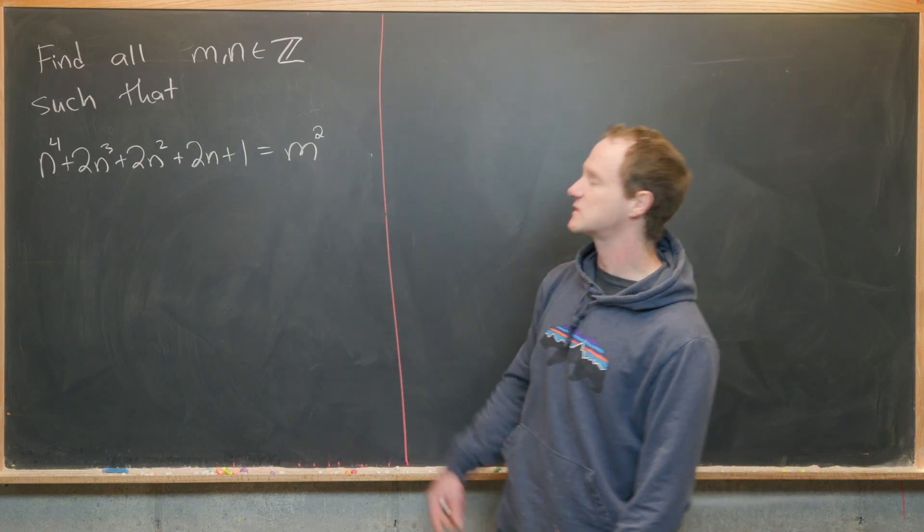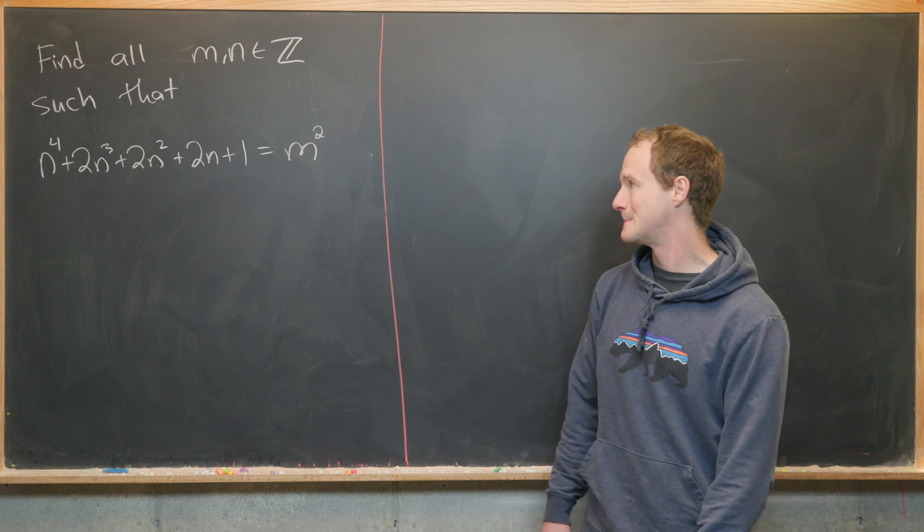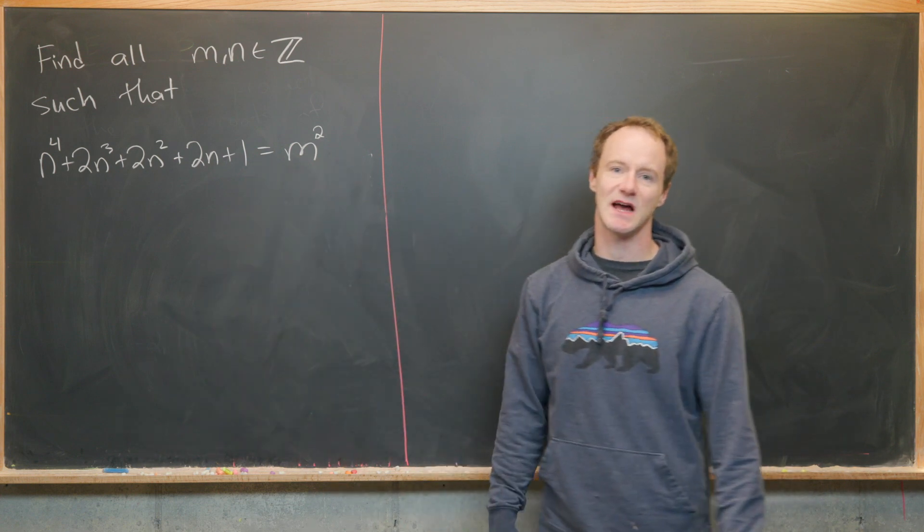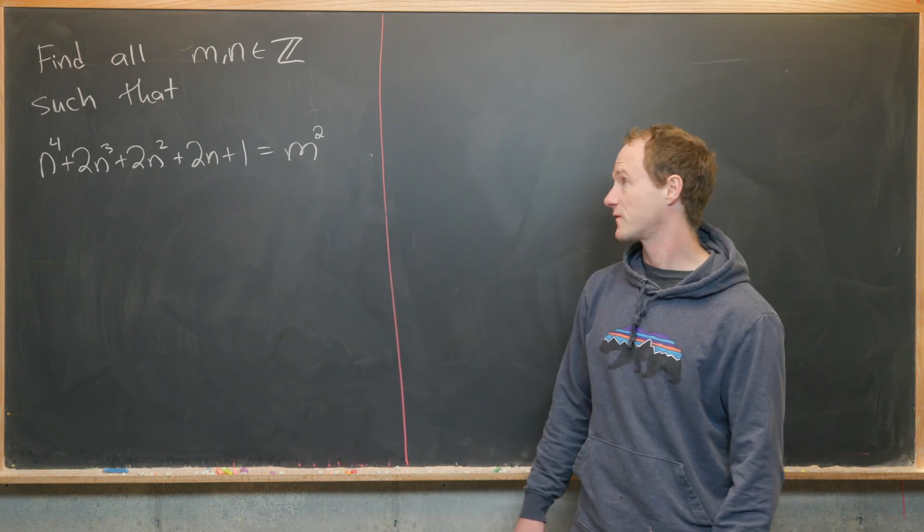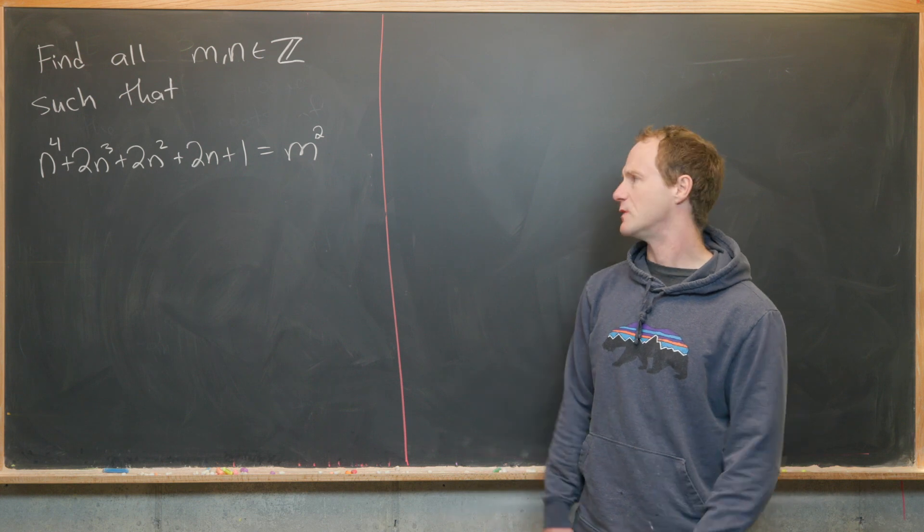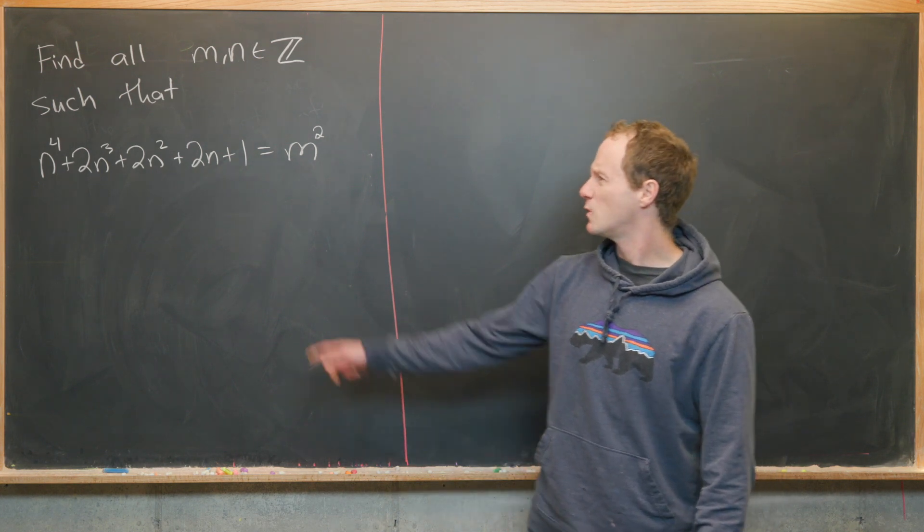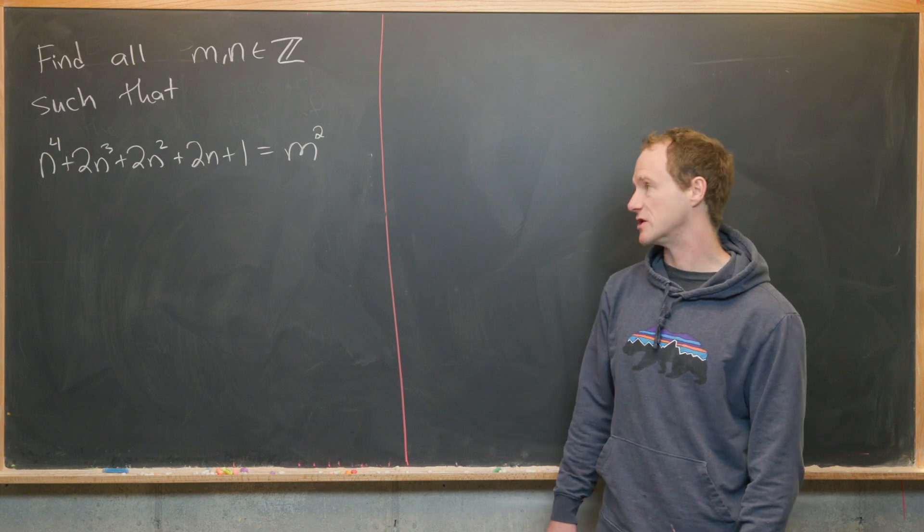So the fact that we've got m squared on the right hand side means that the left hand side must also be a perfect square if we have a solution. So we want to try to factor the left hand side of this equation.